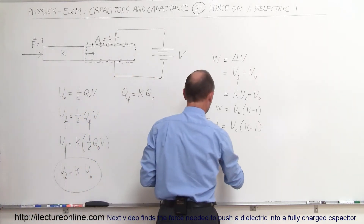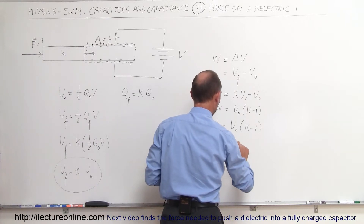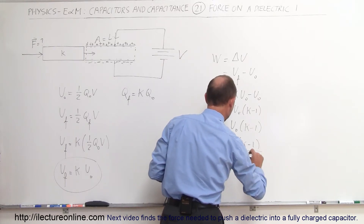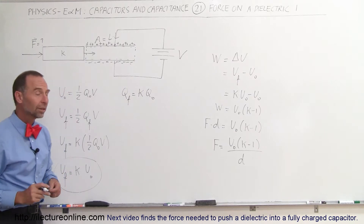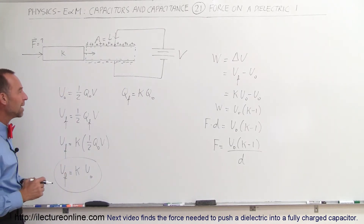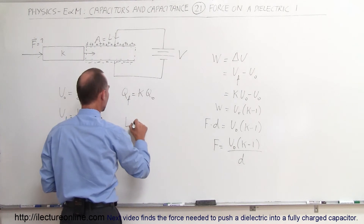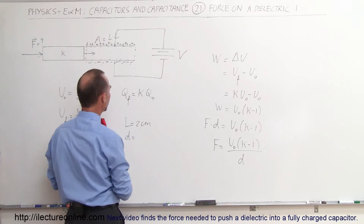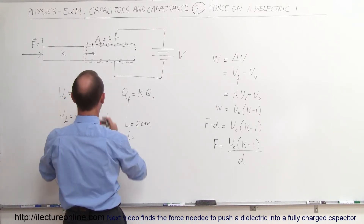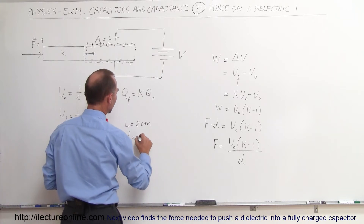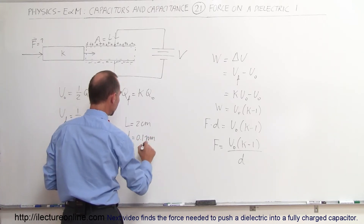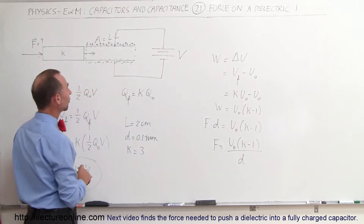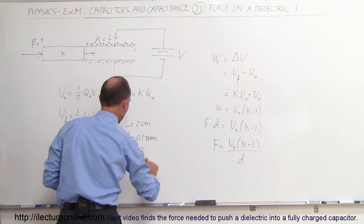We can then say that force equals the energy difference — which is the initial energy times (K minus 1) — divided by the distance. Let's plug in some numbers: L equals 2 centimeters on each side, separation distance D equals 0.1 millimeter, dielectric constant K equals 3, and potential V equals 50 volts.